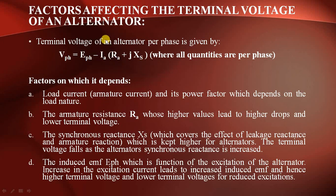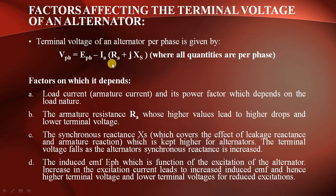The load current or armature current affects the terminal voltage. The second factor is armature resistance RA — if RA is higher, there are higher drops. The armature winding drop is IRA. Consequently the terminal voltage becomes lower.